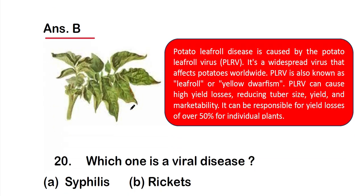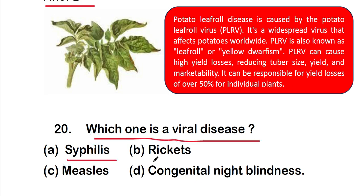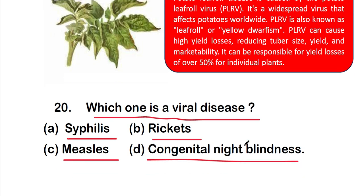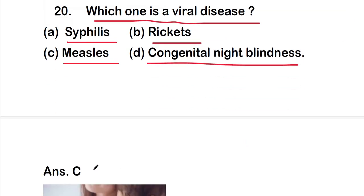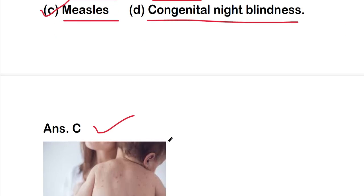Question 20 (the last question): which one is a viral disease — option A: syphilis, option B: rickets, option C: measles, or option D: congenital night blindness? The right answer is option C, measles. Among these options, measles is the viral disease, and it can commonly affect children.